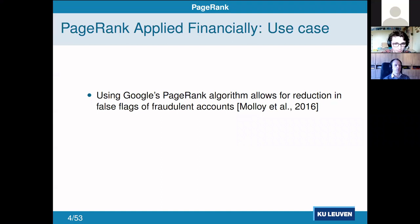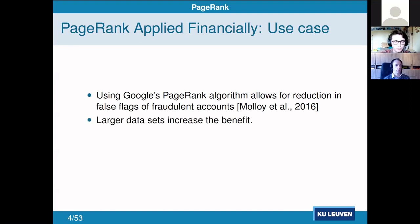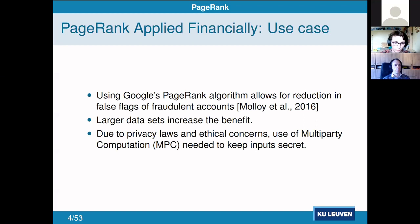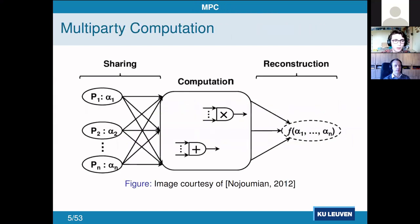According to a 2016 paper, we can use the PageRank algorithm to reduce false flags on fraudulent accounts. A lot of flagging is done automatically by a computer, and by using PageRank we can reduce incorrectly flagging normal accounts as fraudulent. Larger datasets — more bank accounts — increase the benefit by providing more accurate data. But that means banks have to work together and can't just send each other data, as that would breach several laws and raise ethical concerns. So we use multi-party computation to keep inputs secret.